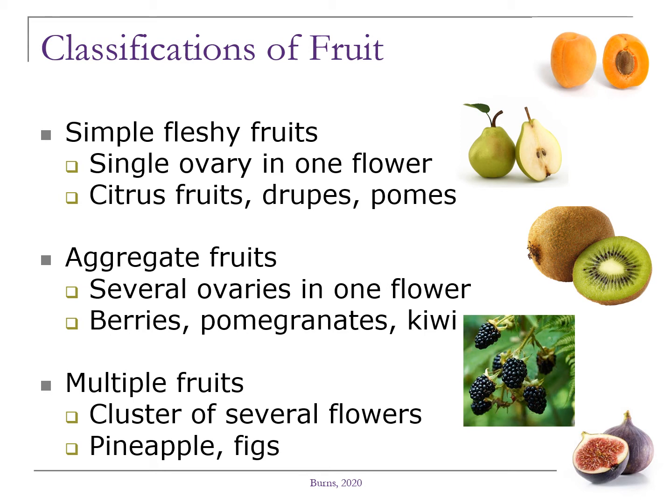Pomes are those that have a core, such as apples and pears. Aggregate fruits develop from several ovaries in one flower. These include berries such as strawberries, blackberries, pomegranates, and kiwi.